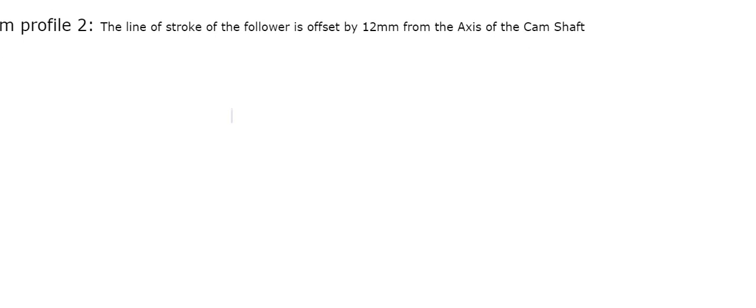Now we will see how it can be done for an offset cam. That means the cam will be offset by a certain distance from the camshaft axis — here it is 12 mm.